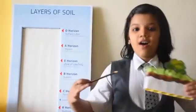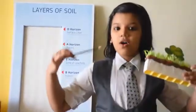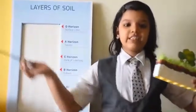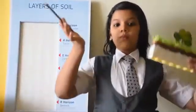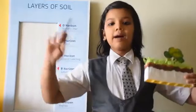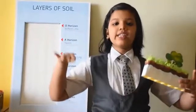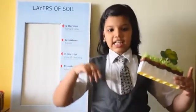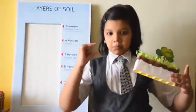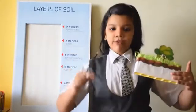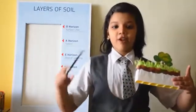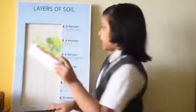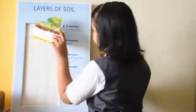The O horizon is the upper layer of the topsoil, which is mainly composed of organic materials such as dried leaves, grasses, small rocks, twigs, surface organisms, fallen trees, and other decomposed organic matter.